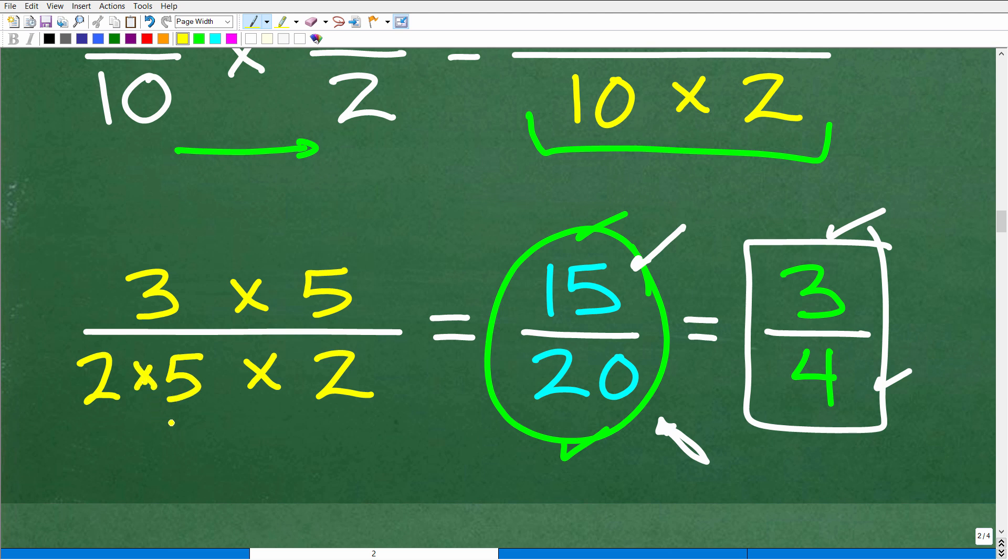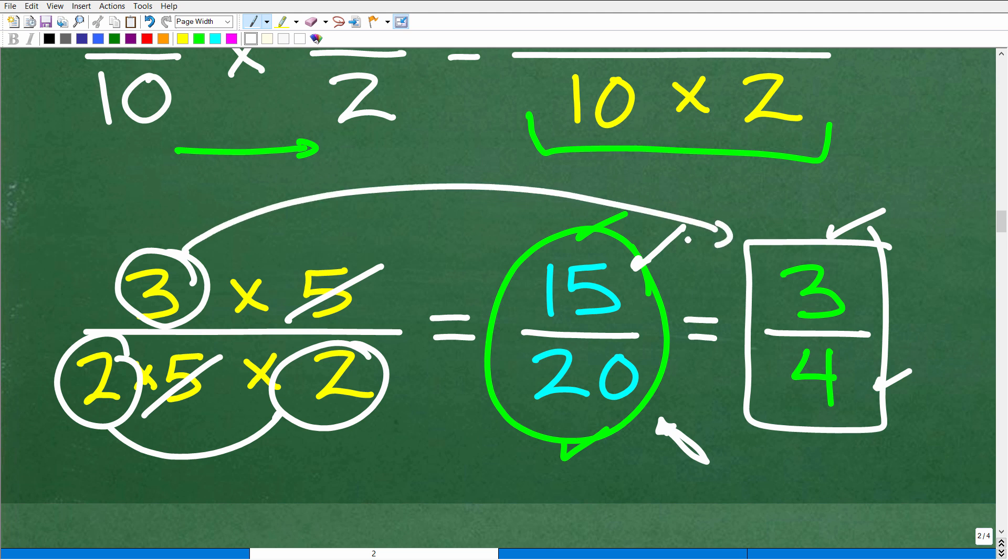We'll actually write it this way. So here's all the factors. Now we just cross-cancel like factors one for one. So if you see a 5 up here in the numerator, you look down in the denominator. Oh, I got a 5. We could cross-cancel that. So there's no more like factors between the numerator and denominator. So that leaves us with a 3 and a 2 and a 2 down here. 2 times 2 is 4. And then just a 3 in the numerator.